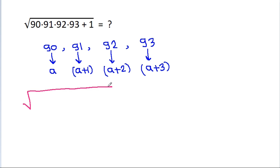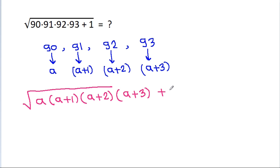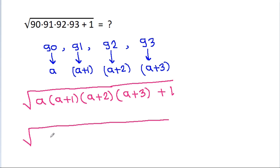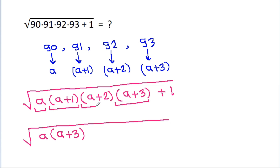It is a square root, and 90 is a, times 91 is a plus 1, times 92 is a plus 2, times 93 is a plus 3, plus 1. If we take a and a plus 3 together, then it is a times a plus 3. And if we take a plus 1 and a plus 2 together, it is a plus 1 times a plus 2, plus 1.